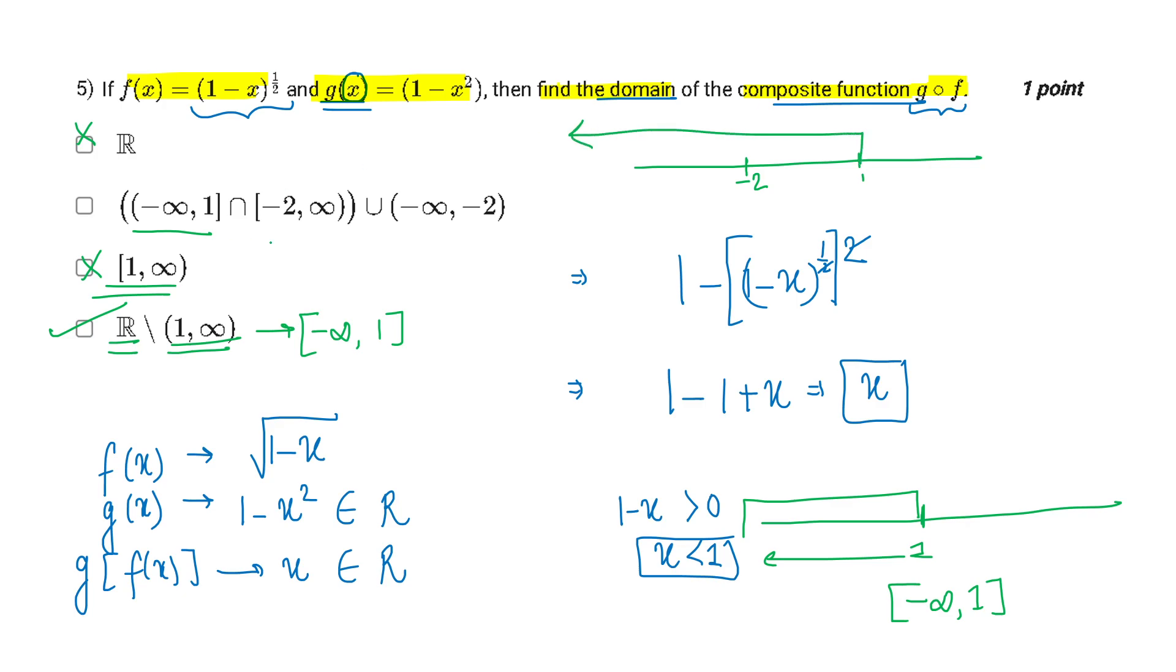So minus infinity to 1, aur minus 2 se infinity, minus 2 se infinity ka meko intersection lena hai. So the area which is included is this one. Ab iska mujhe minus infinity, minus 2.